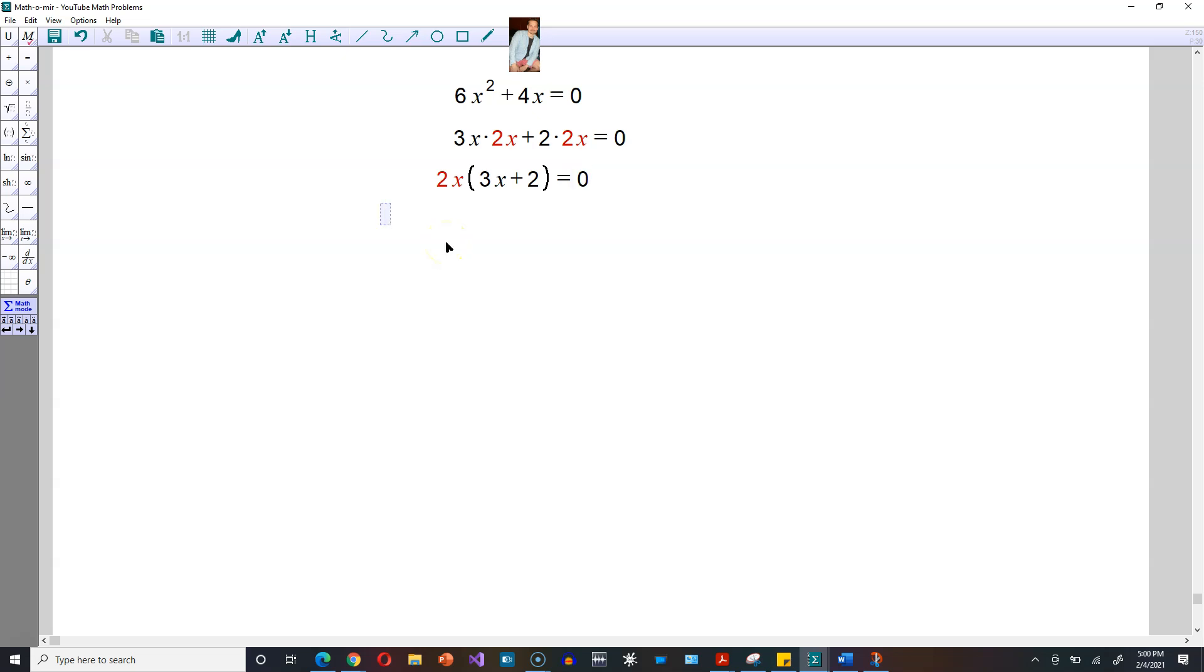Now by the principle of zero products, either 2x is equal to 0, or the other possibility is that 3x plus 2 has to be equal to 0. Let's solve these.